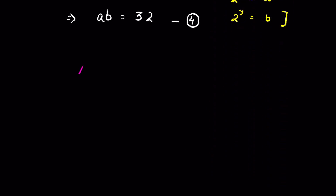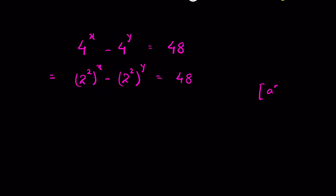Now from equation 1, 4^x - 4^y = 48. We can write 4 as 2^2, so this becomes (2^2)^x minus (2^2)^y equals 48. Using the rule that (a^m)^n equals (a^n)^m, we rewrite this as (2^x)^2 minus (2^y)^2 equals 48.